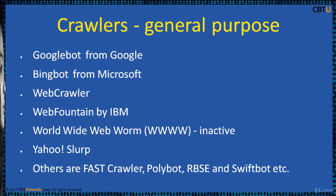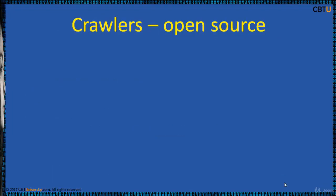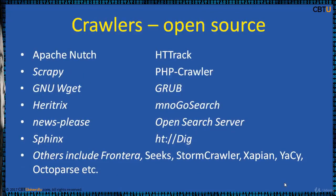The World Wide Web Worm (WWWW) was a crawler used to build a simple index of document titles and URLs. Yahoo Slurp was the Yahoo search crawler until Yahoo joined with Microsoft to use Bingbot instead. Other popular crawlers include Fastcrawler, Polybot, RPSC, Swiftbot, and others.